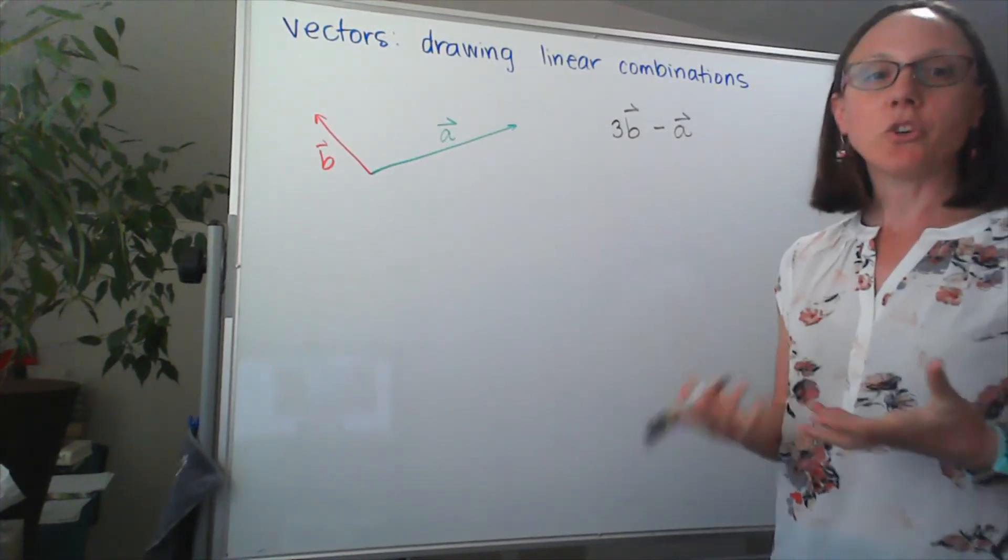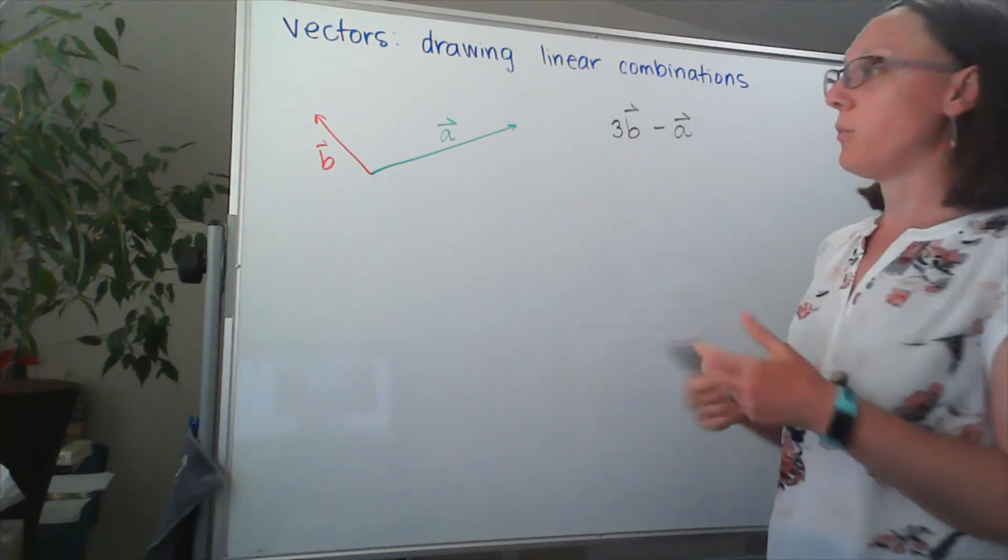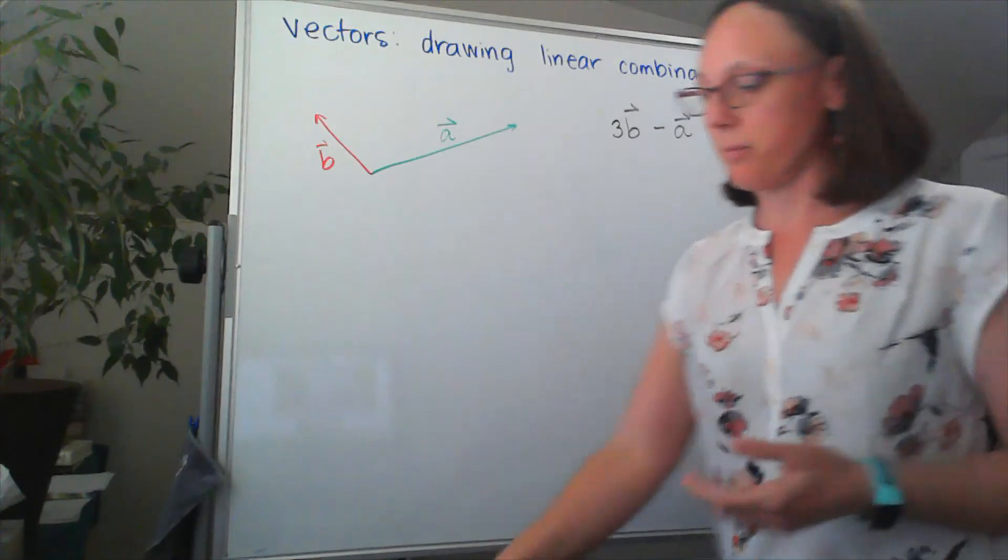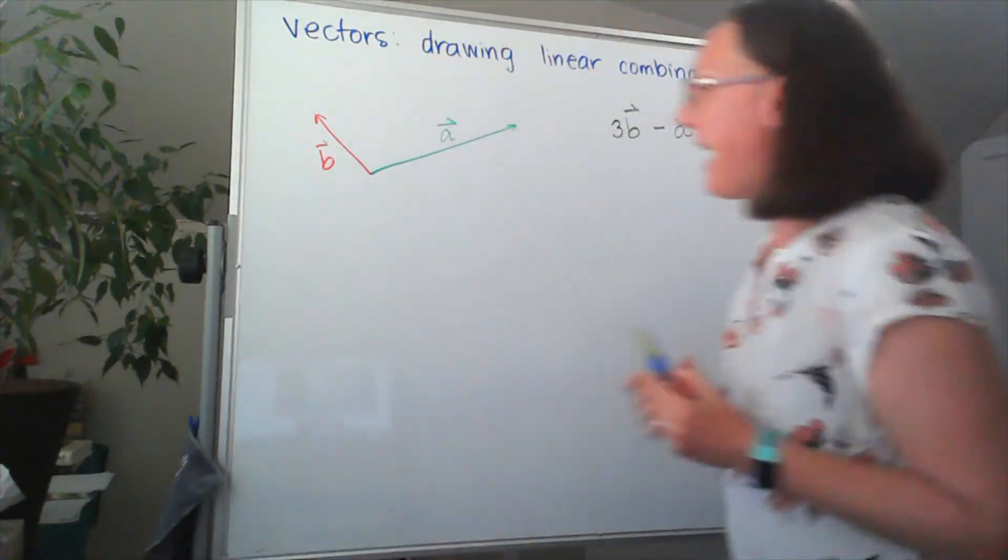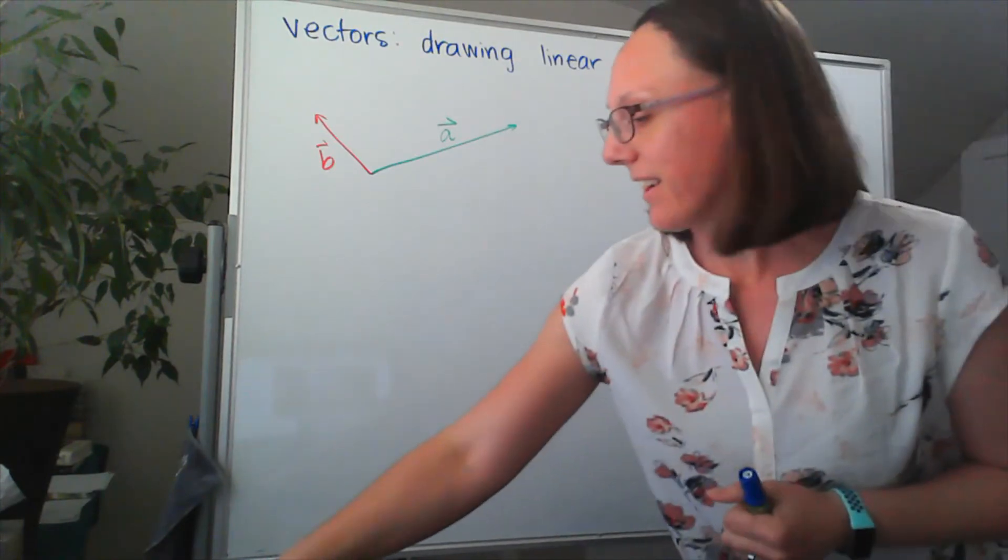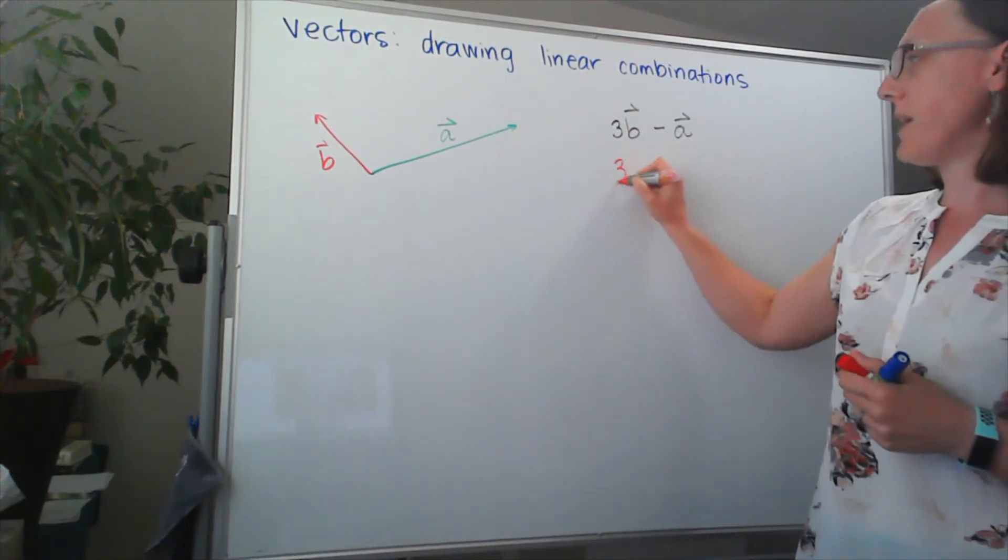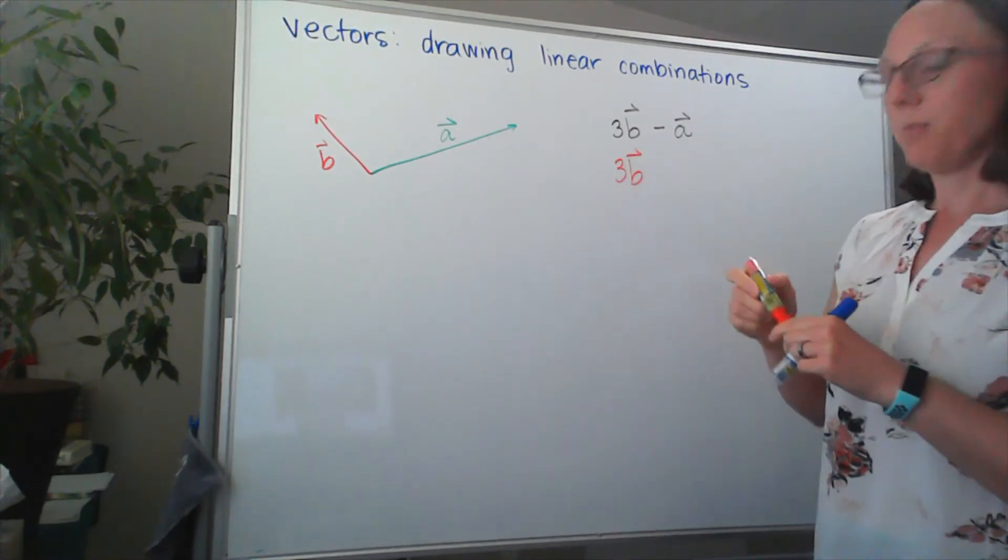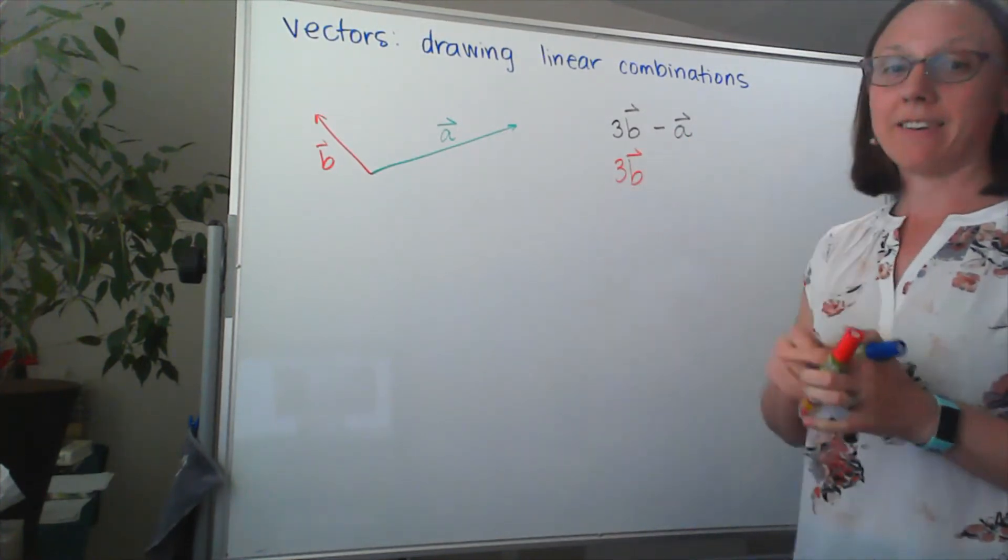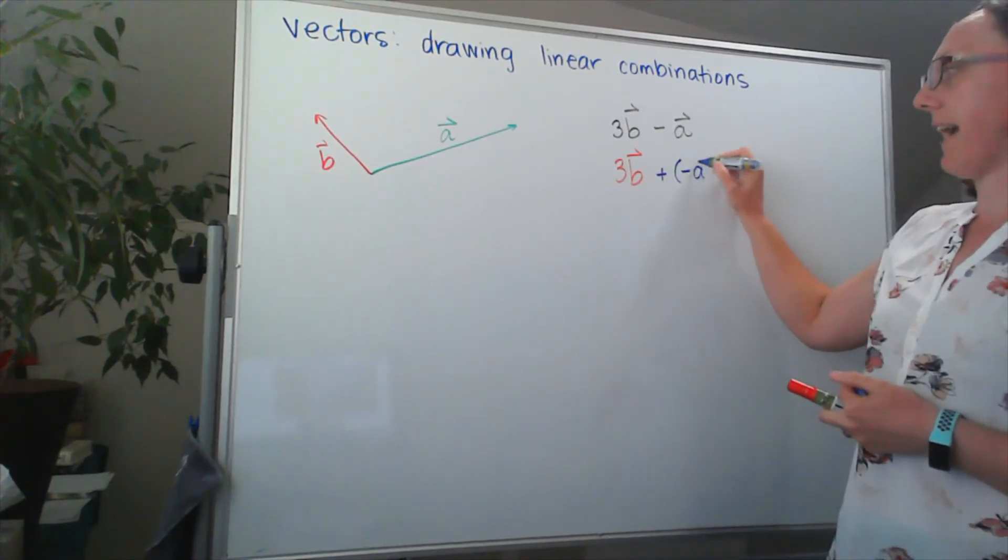Well, there are two ways that we can look at this linear combination. The way that kind of works best for me is to actually rewrite this to think about that as saying that I want three copies of B. But instead of subtracting A, I'm going to think about adding the vector negative A.